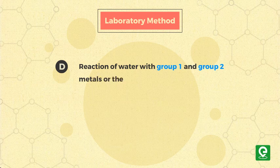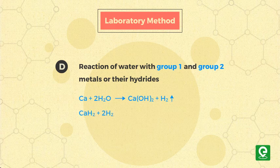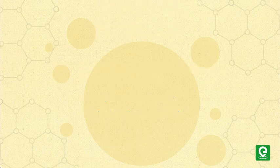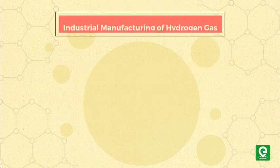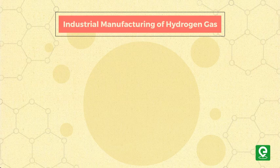Method D: reaction of water with group 1 and group 2 metals or their hydrides. Calcium or calcium hydride reacts with water to produce calcium hydroxide, releasing hydrogen gas. This concludes all the laboratory methods.